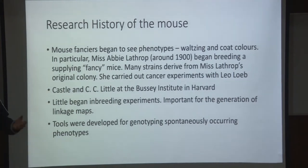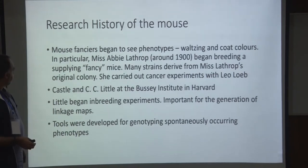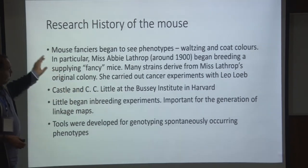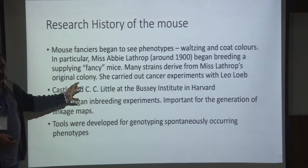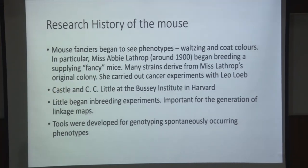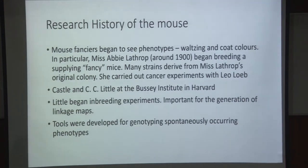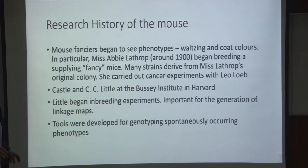She was supplying Castle and his colleague Clarence C. Little, who were very important for the early development of the mouse as a genetic resource. Little continued those inbreeding experiments to develop linkage maps, which are very important. Tools were then developed for genotyping; in the course of inbreeding they realized they were getting lots of spontaneous mutations. This was just before DNA was known to be the hereditary material, so genes and their correspondence to DNA still wasn't known at this point.